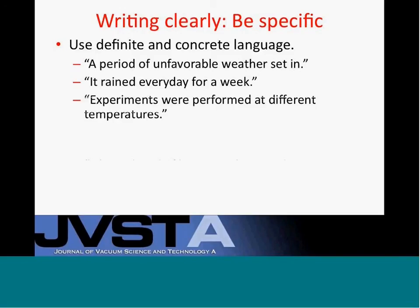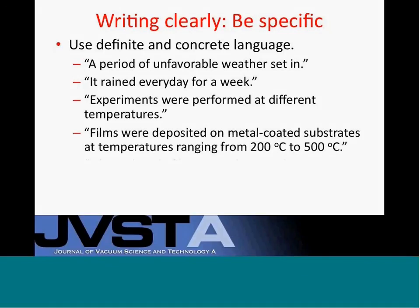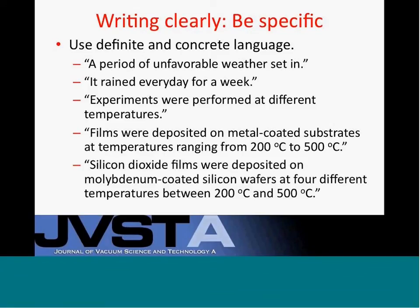Here's an example that might appear in a scientific article: 'Experiments were performed at different temperatures.' One doesn't know what kind of experiments or what temperatures. A more specific version: 'Films were deposited on metal coated substrates at temperatures ranging from 200 degrees centigrade to 500 degrees centigrade.' You can make it even more specific: 'Silicon dioxide films were deposited on aluminum coated silicon at four different temperatures between 200 degrees centigrade and 500 degrees centigrade.'